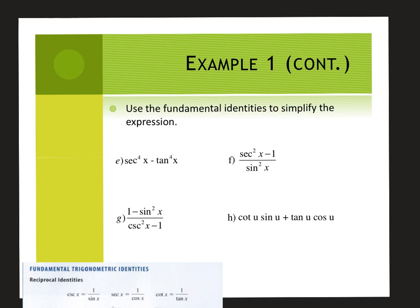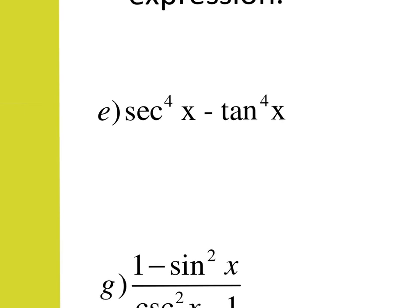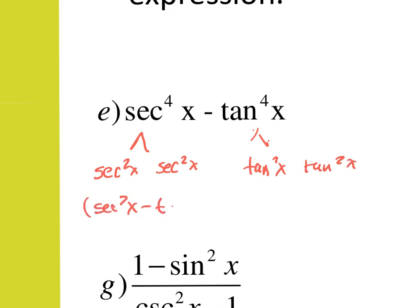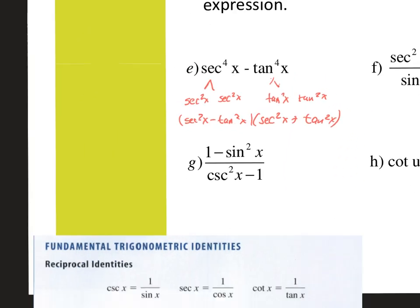These look a little more difficult than they really are, I promise. I have secant to the fourth minus tangent to the fourth. This is like the difference of perfect squares. What gives you secant to the fourth? Secant squared times secant squared. What gives you tangent to the fourth? Tangent squared times tangent squared — just different signs. So you have the quantity secant squared x minus tangent squared x times the quantity secant squared x plus tangent squared x. From there you can break it down using the Pythagorean identities.